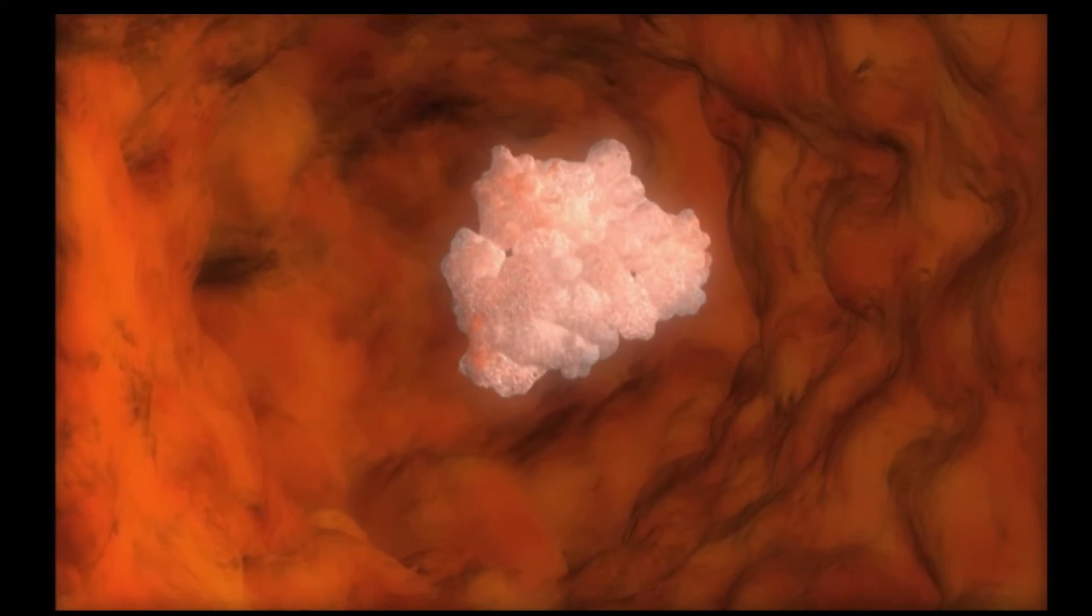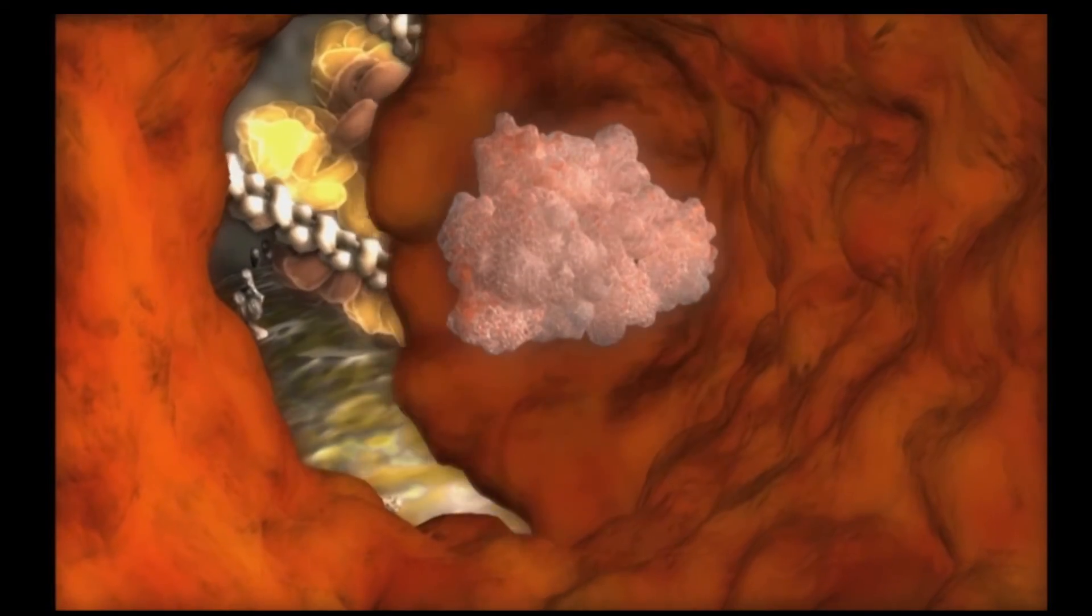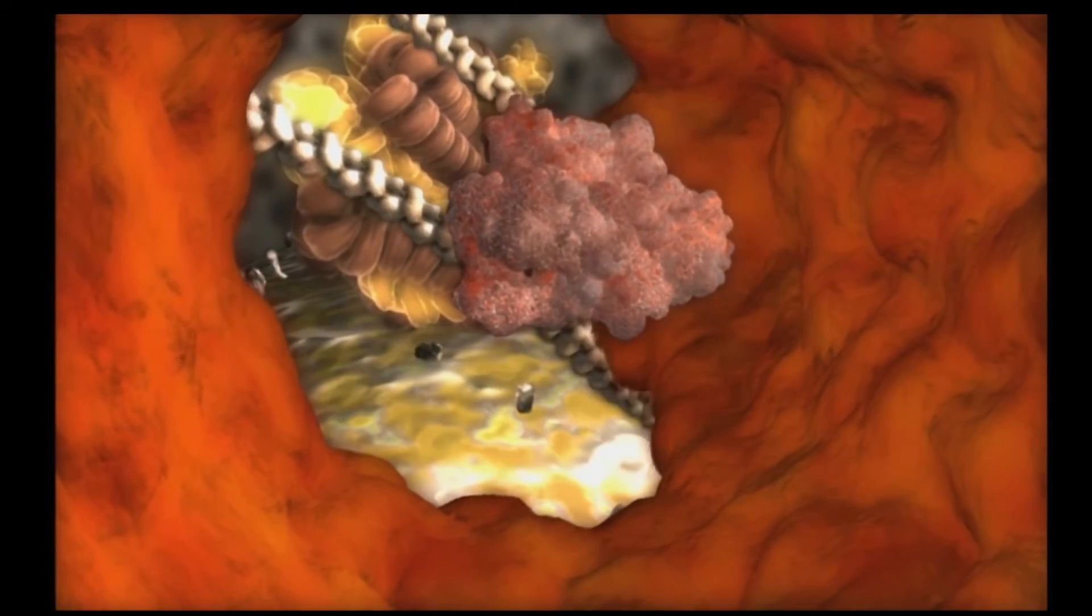After the chain is folded into a protein, it is released into the outer cytoplasm to do its job in the cell.